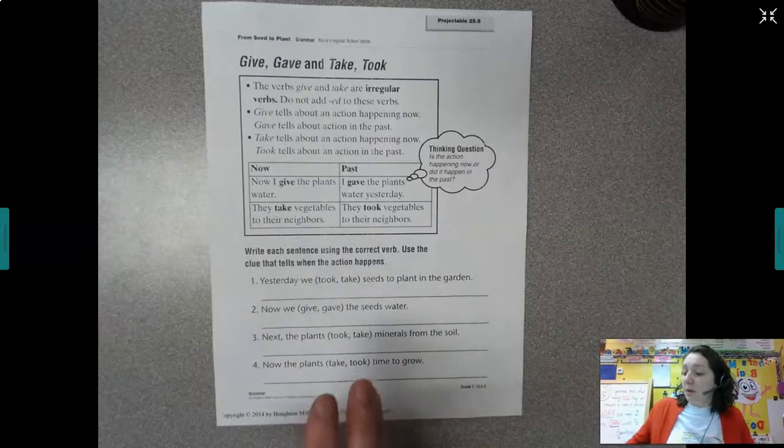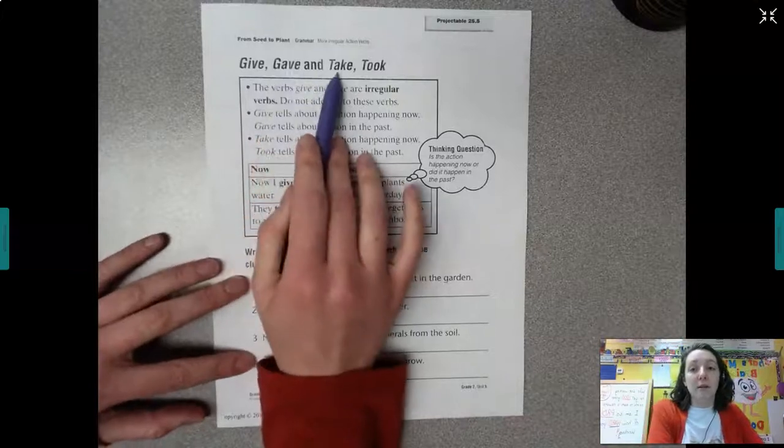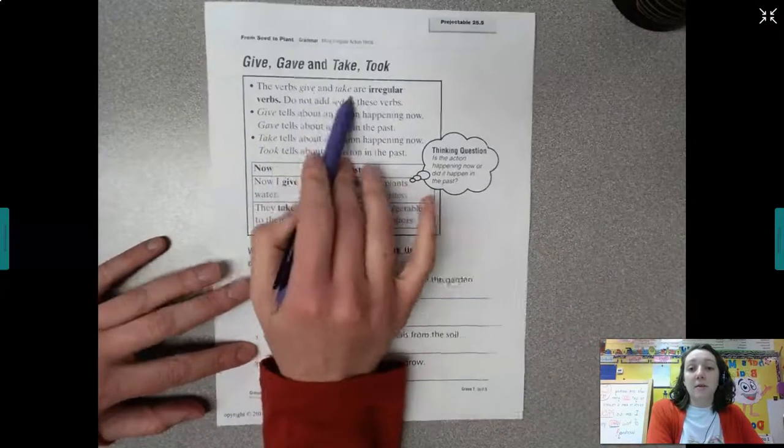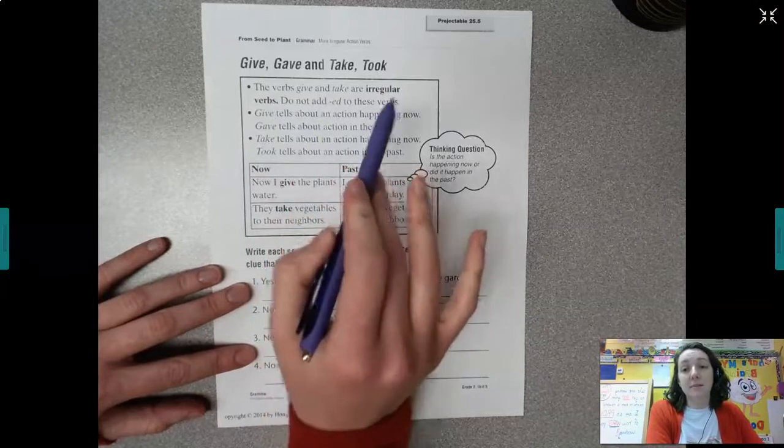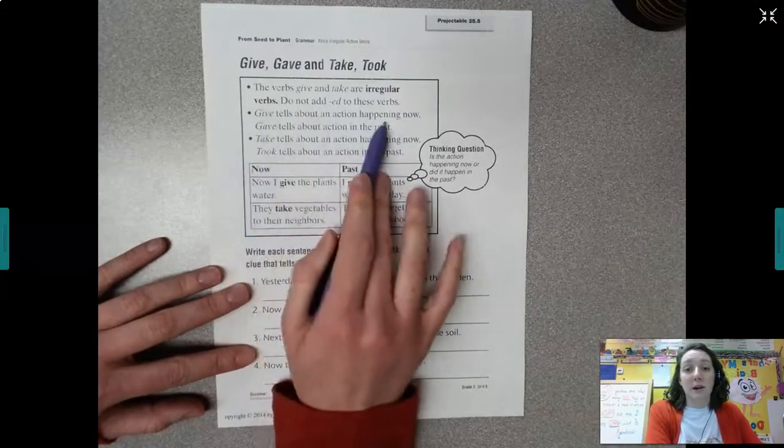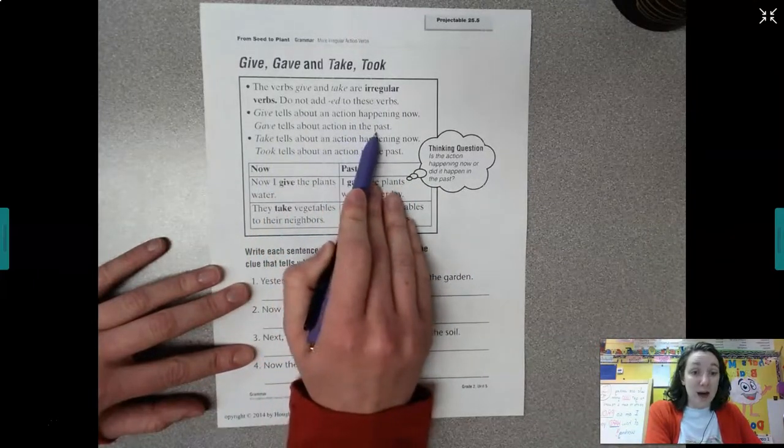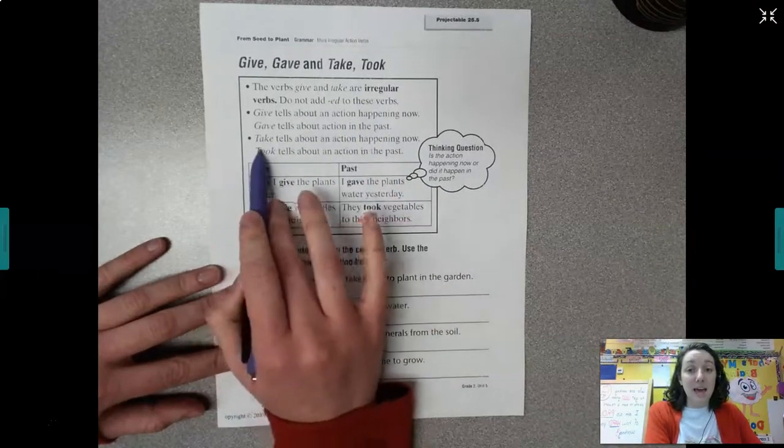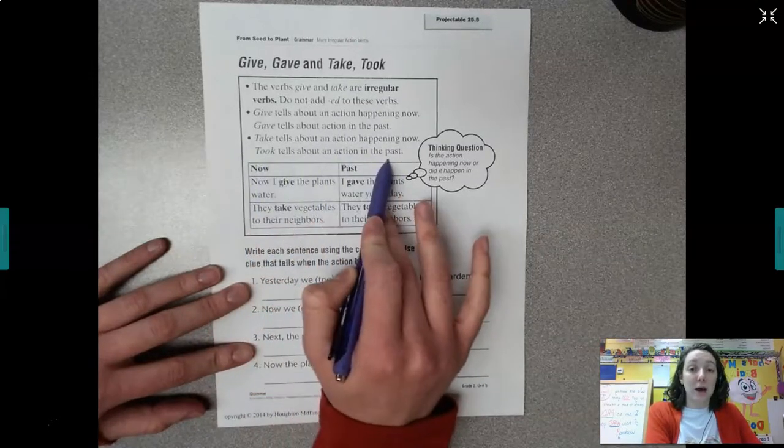Now, two other words we're working with today. They're also irregular. Give, gave, and take, took. So, give and gave are also irregular verbs. They do not add that ed in the past. Give tells about an action happening now in the present. Gave tells about an action in the past. Take tells about an action happening now. Took tells about an action in the past.